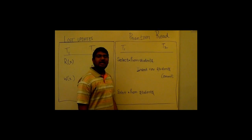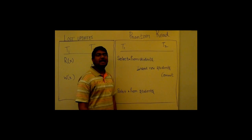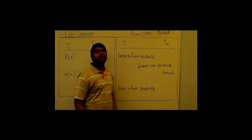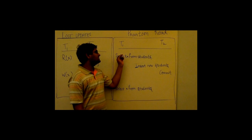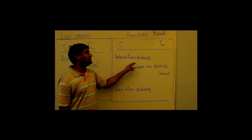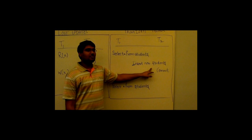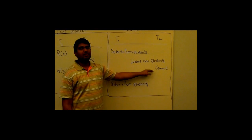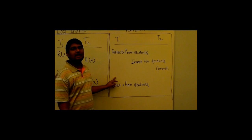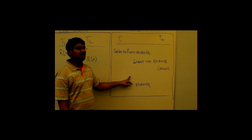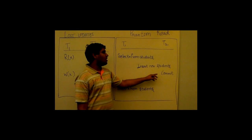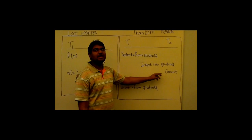In phantom read, it is same as unrepeatable read. In unrepeatable read, the anomaly is performed on a single data item, but in phantom read, the anomaly is performed on a group of records. Here in this example, in transaction T1, a search query is performed with some search condition and in transaction T2, some new records are inserted and then a commit is performed. In transaction T1, a search query is performed with the same search condition. Here T1 sees modified values or some new records are inserted or deleted.